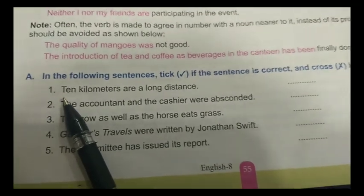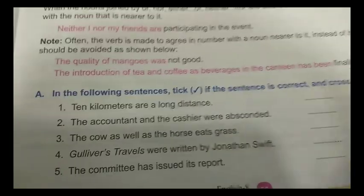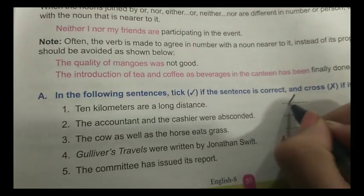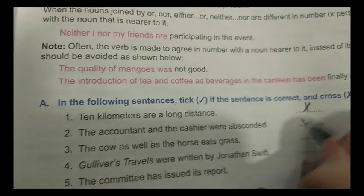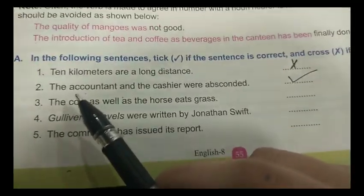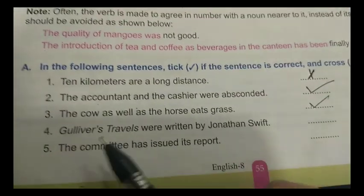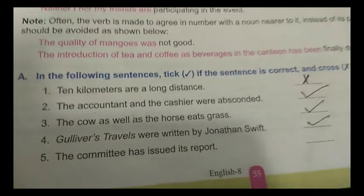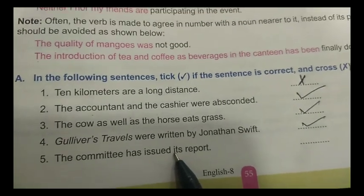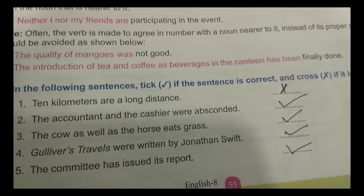First: 'Ten kilometers are a long distance' — we don't use plural here, so it is a wrong sentence. Put a cross. Second: 'The accountant and the cashier were absconding' — correct sentence, tick. Third: 'The cow as well as the horse eats grass' — correct, tick. Fourth: 'Gulliver's Travels were written by Jonathan Swift' — correct, tick. Fifth: 'The committee has issued its report' — correct, tick. So the first gets a cross and the remaining four get ticks.